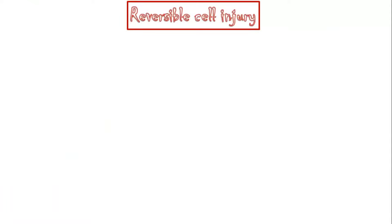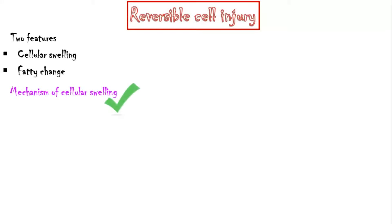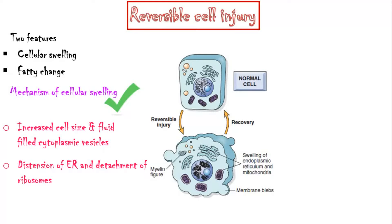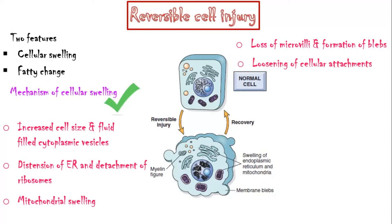Now let's discuss about reversible cell injury. There are two features identifiable by light microscopy: cellular swelling and fatty change. Microscopic features of a swollen cell — as shown in a picture from Robbins' textbook of pathology — include increased cell size with fluid-filled vesicles in the cytoplasm, distention of endoplasmic reticulum and detachment of ribosomes, mitochondrial swelling, loss of surface microvilli and formation of blebs, loosening of cellular attachments, and accumulation of myelin figures, which are phospholipid masses derived from damaged cell membranes. These phospholipid particles can break down into fatty acids, which may become calcified due to high intracellular calcium levels. Clumping of chromatin due to increased acidity is also a feature.